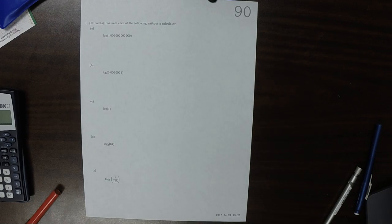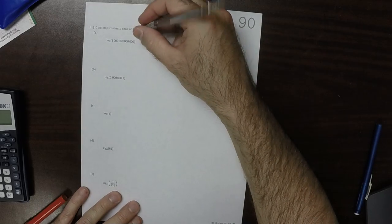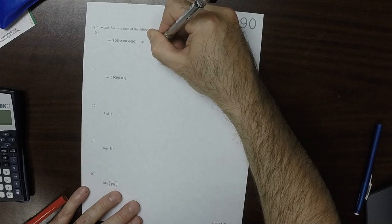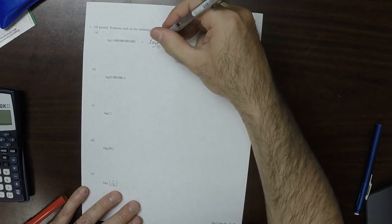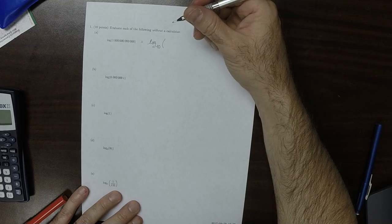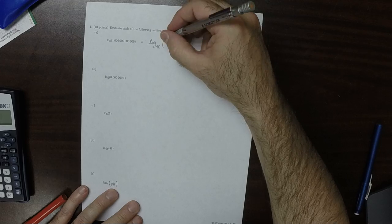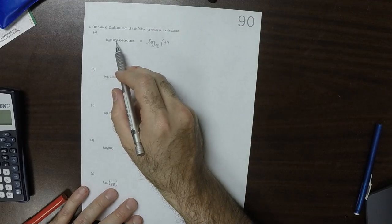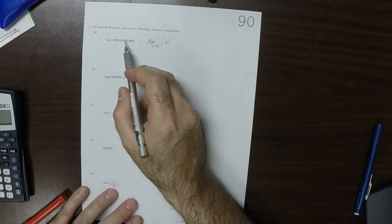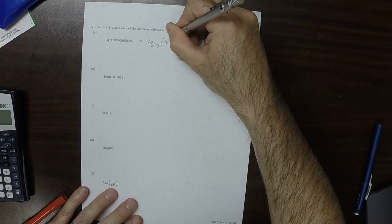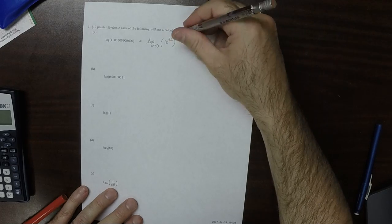This is the solution to written homework 90. This is the log base 10, because the base is not specified, it's understood to be 10. This is the log base 10 of 10 to what exponent? So that'd be 1, 2, 3, 4, 5, 6, 7, 8, 9, 10, 11, 12. So 10 to the 12. That's just 12.